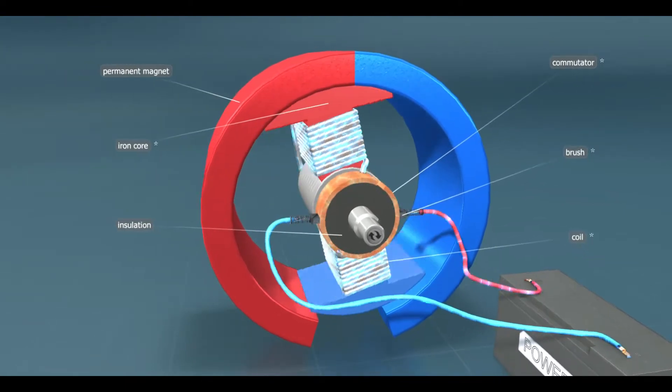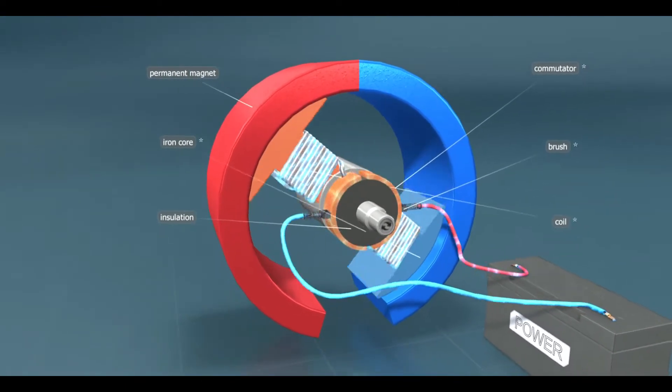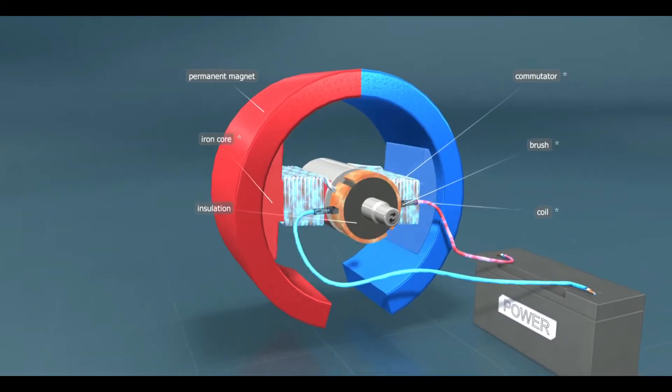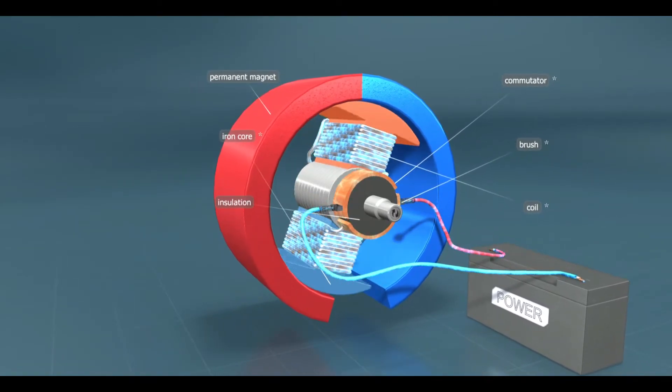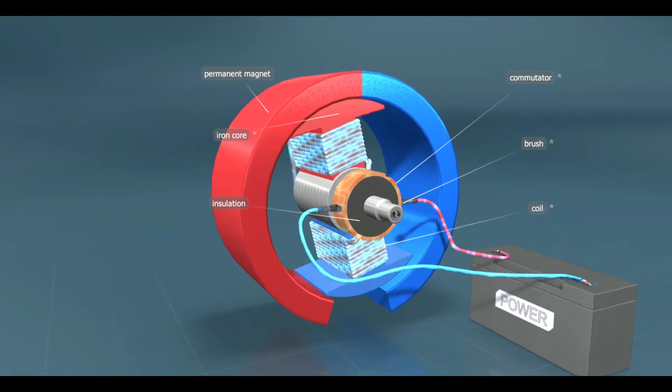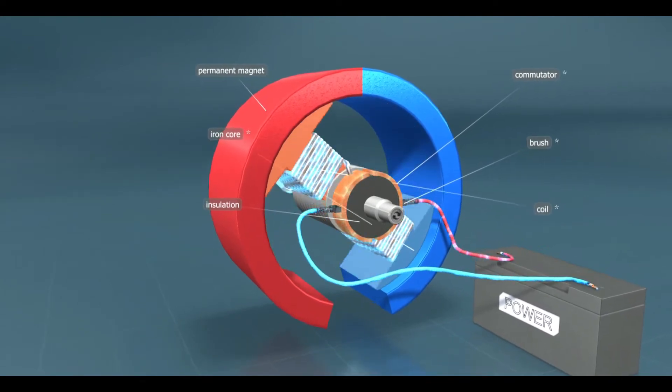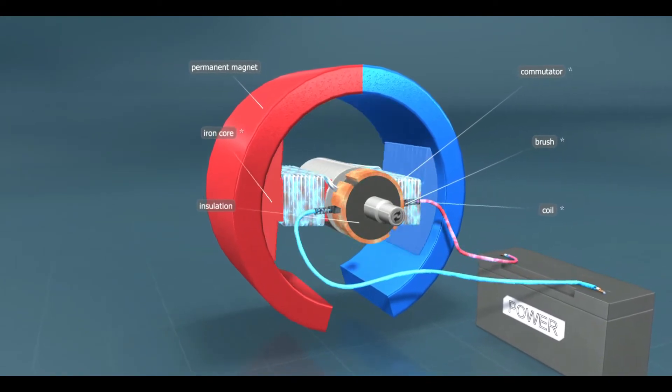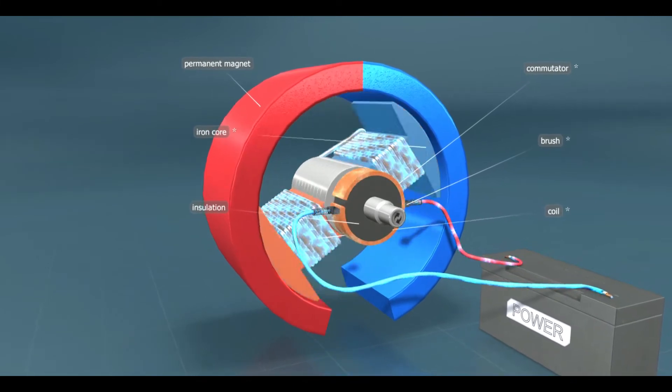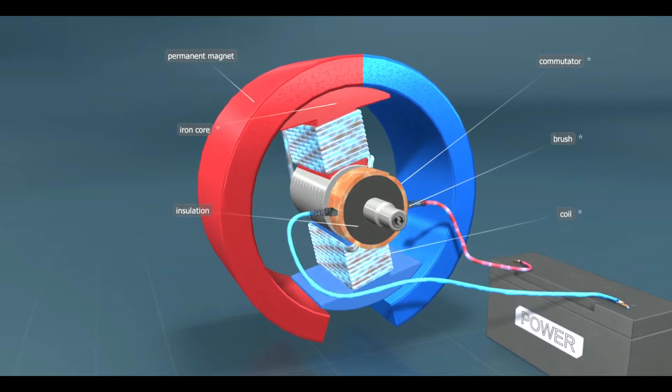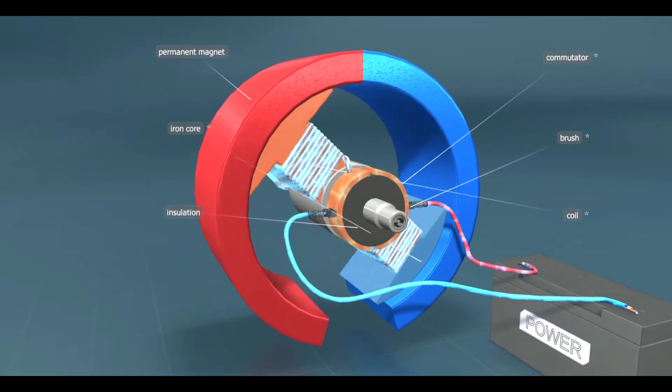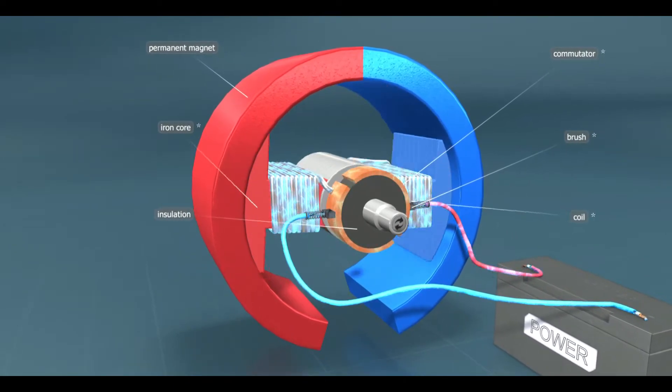As a result of the electric current applied to it, the coil becomes a magnet. It turns in order to align itself with the polarity of the permanent magnet. However, before aligning itself in the correct direction, the polarity of the electric current in the commutator is reversed. Accordingly, the coil continues to rotate toward the opposite pole, and this is how it keeps the motor rotating.